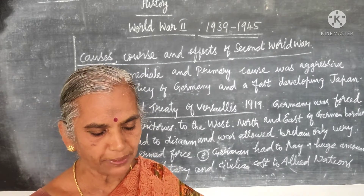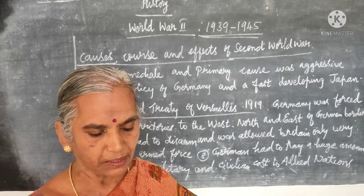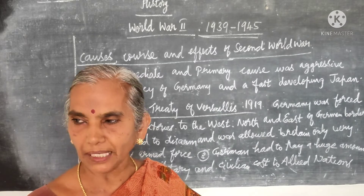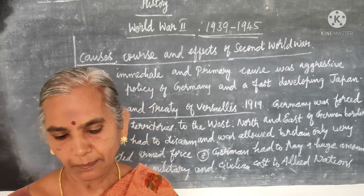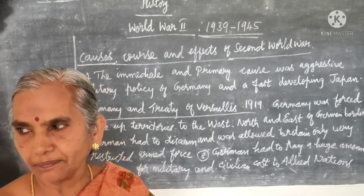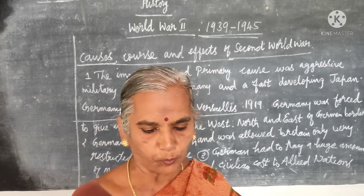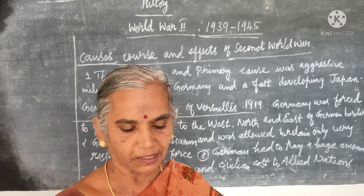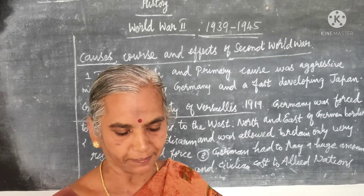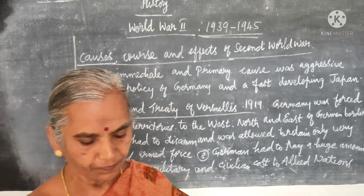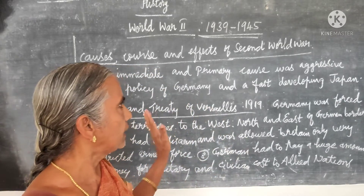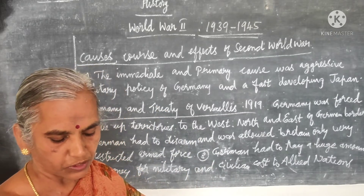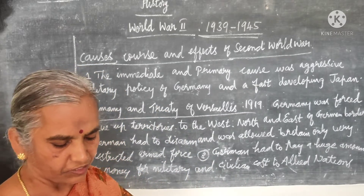In Britain, Prime Minister Neville Chamberlain resigned in 1940 and Winston Churchill came to power. These were the situations leading to the Second World War. The Second World War was a modern war fought with heavy military equipment. Modern technology used included submarines, battleships, aircraft carriers, fighter planes, and bomber planes, involving a very large resource base.